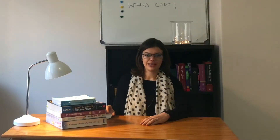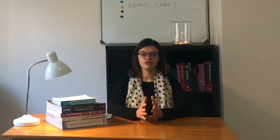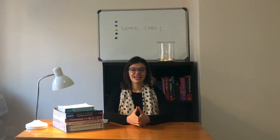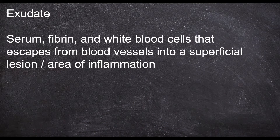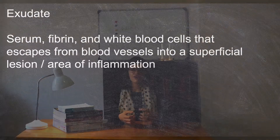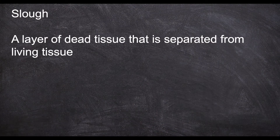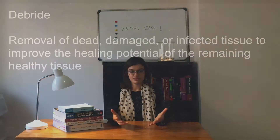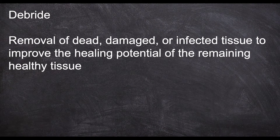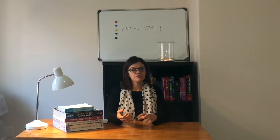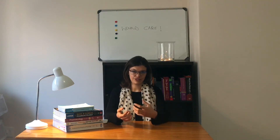Before we start looking at the products, we first have to discuss some important terminology. The first one is exudate — a mixture of serum, fibrin and white blood cells that came from the blood vessels and are located inside the wound or at the area of inflammation. Slough means to separate dead tissue from living tissue, as well as debridement, which means the removal of dead, damaged or infected tissue from the wound to promote the natural healing of the healthy tissue.